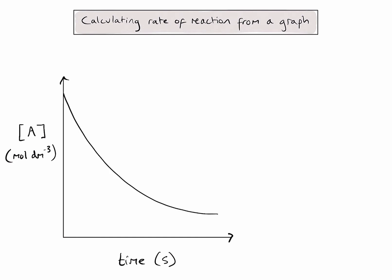In this example, A must be a reactant because its concentration is decreasing over time. And you might notice that the rate at which it is decreasing slows down as my reaction progresses.